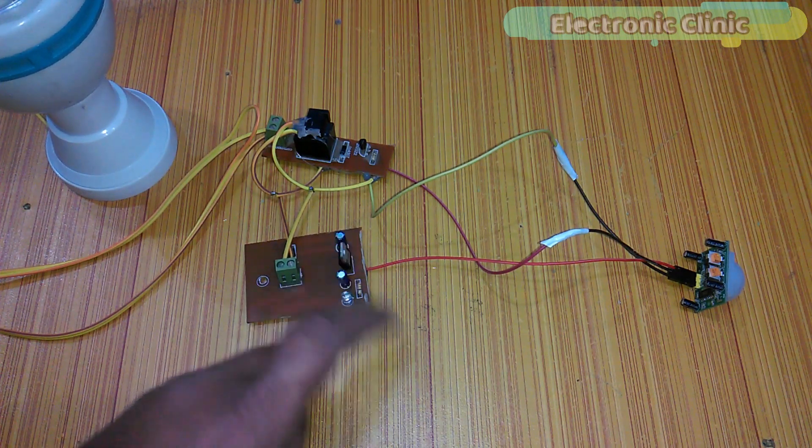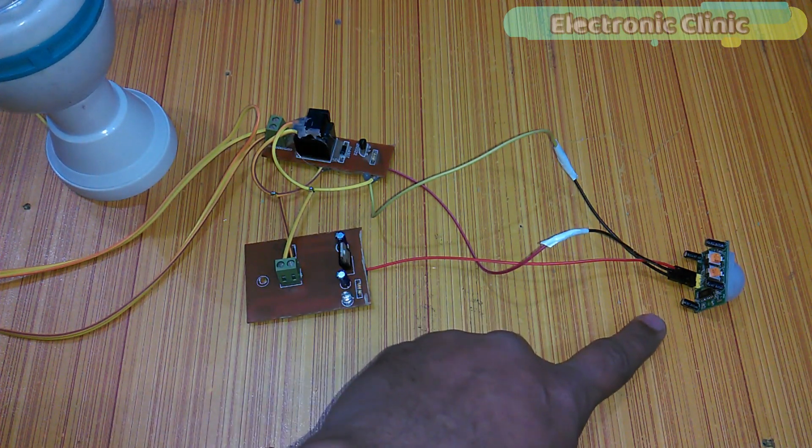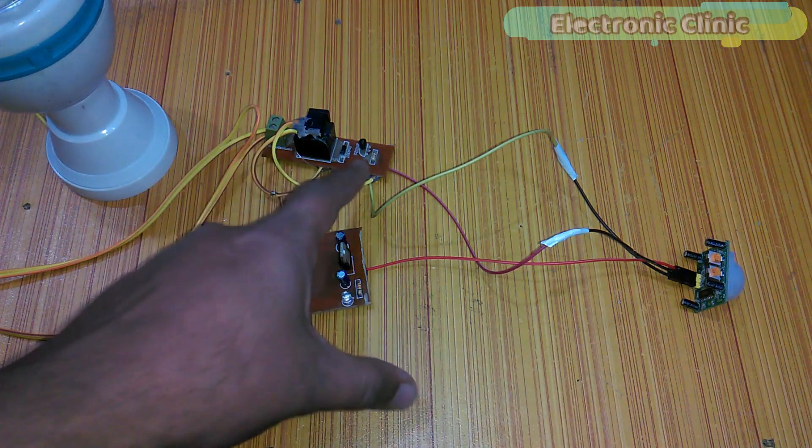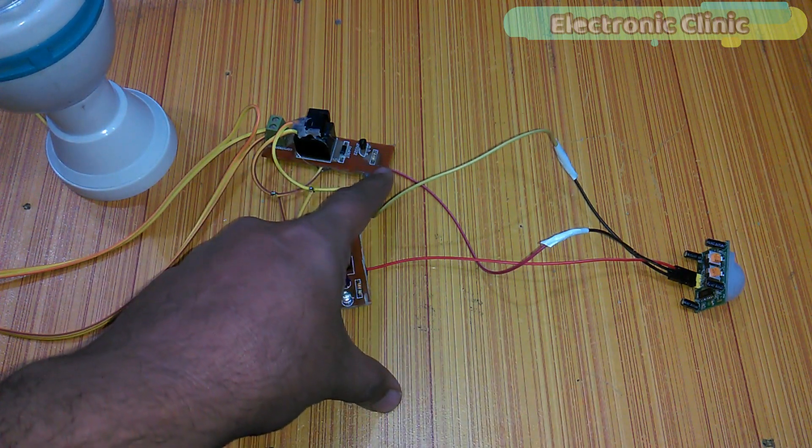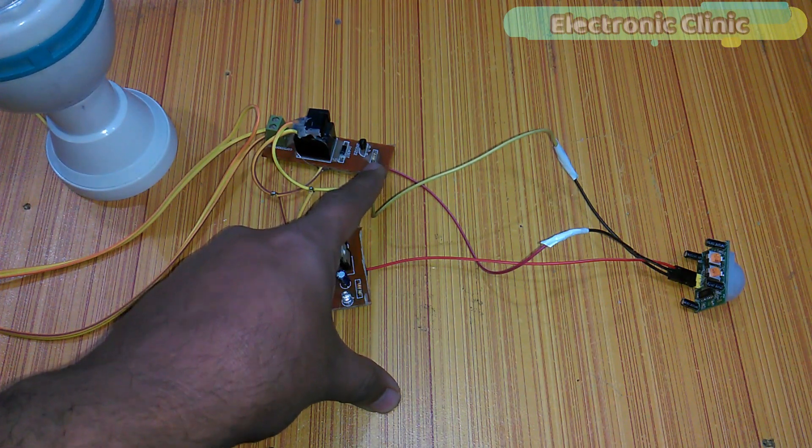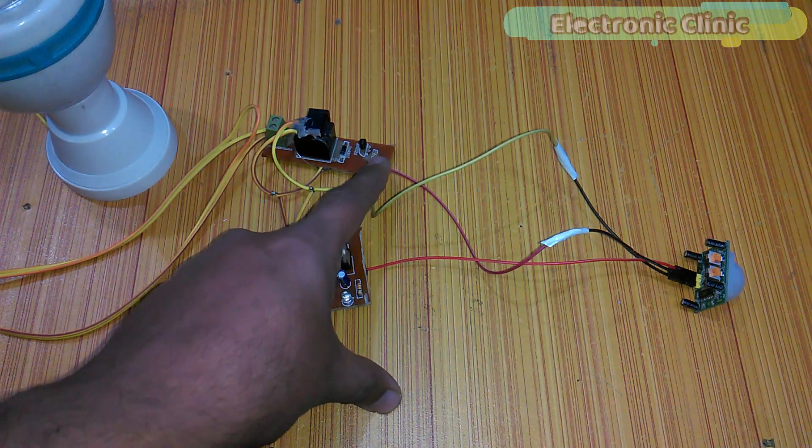The output of the PIR sensor is connected with the base of 2N2222 NPN transistor through a 10k resistor. While the ground of the PIR sensor is connected with the ground.